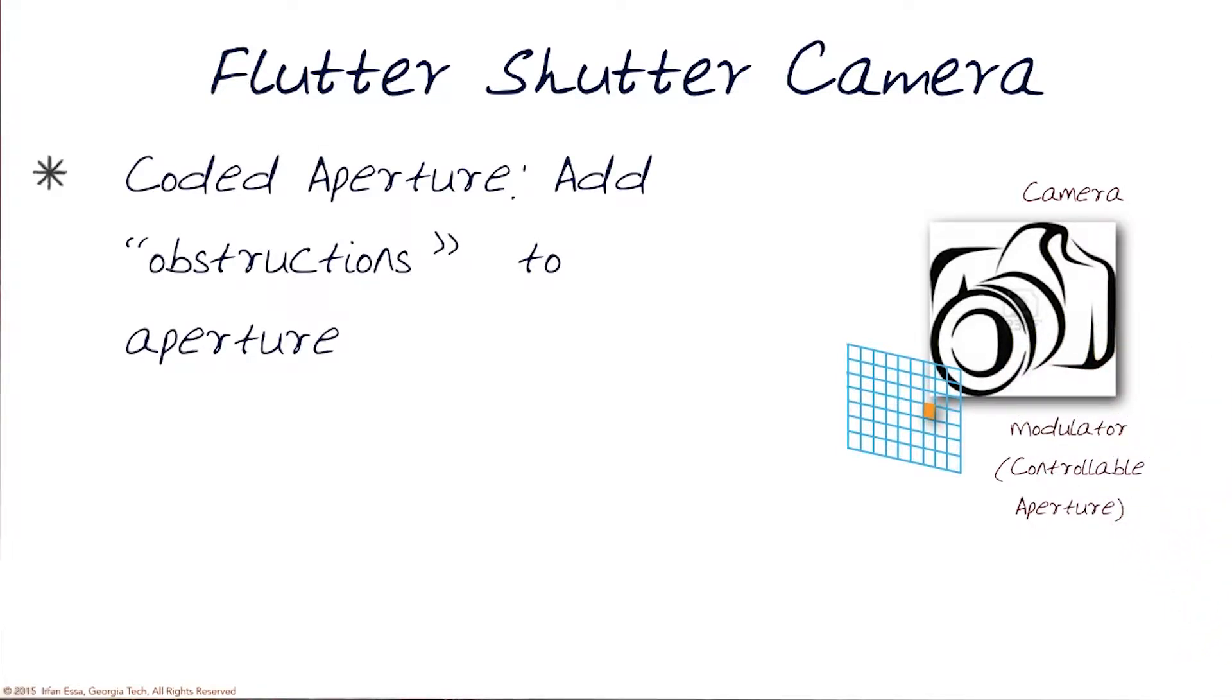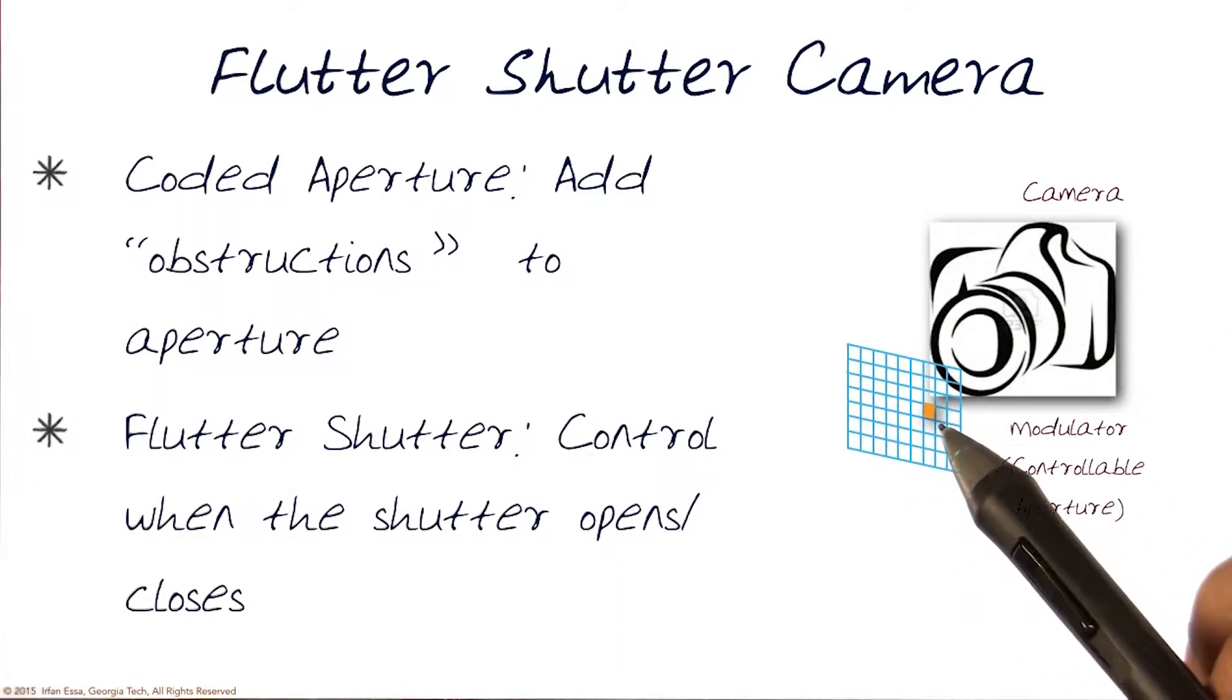In coded aperture, we added obstructions to the aperture. In flutter shutter, we control when the shutter opens and closes. We have the whole aperture and just figure out how to open and close it in a specific manner.